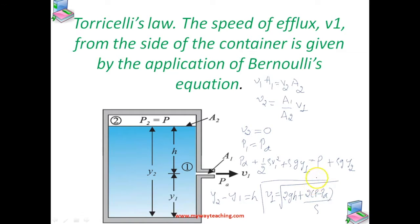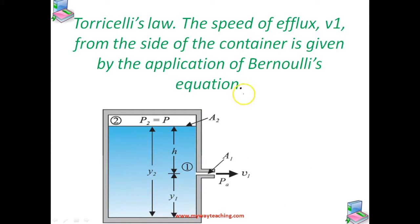When p is very much greater than pa, 2gh may be ignored. The speed of efflux is determined by the container pressure. Such a situation occurs only in case of rocket propulsion.